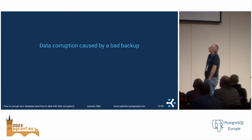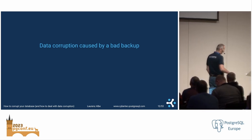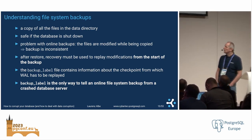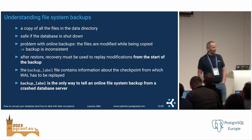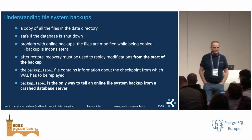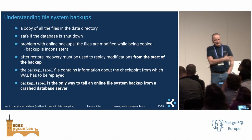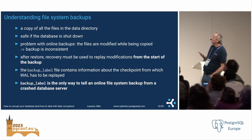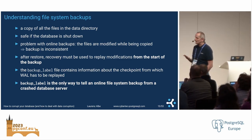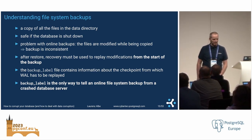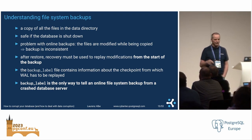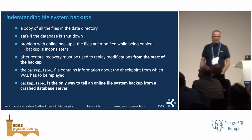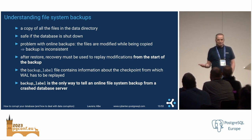The next way to easily break a database is with a backup. I'm talking about filesystem backups — a copy of all the files, which is consistent if your database is down. But if the database is running, the files will be inconsistent and you need recovery from the beginning to the end of the backup. A very important role is played by the backup label file, which contains the location of the checkpoint that started the base backup — it's the only way Postgres can tell a backup from a crash data directory. Otherwise they look the same.